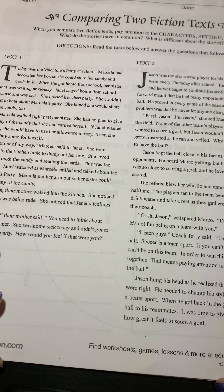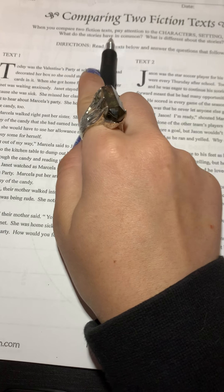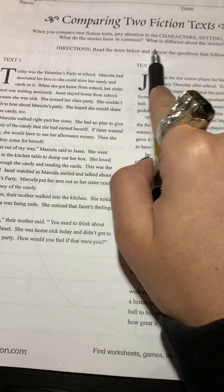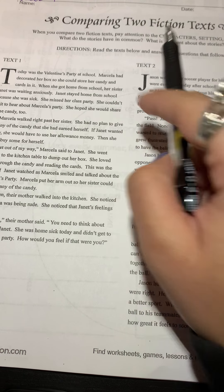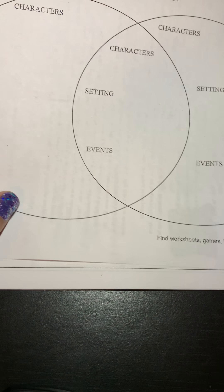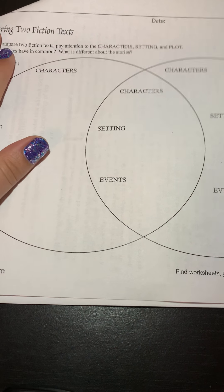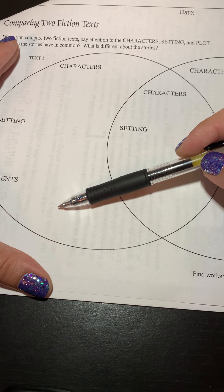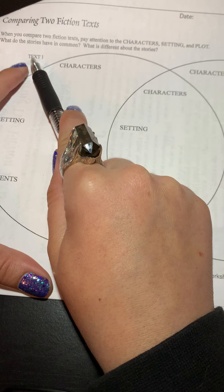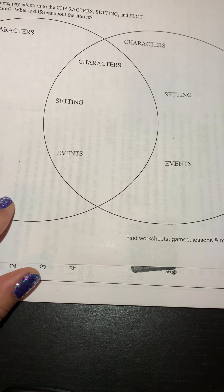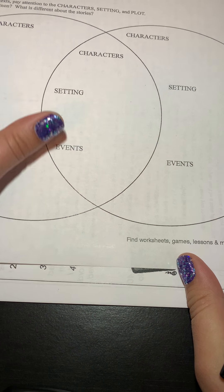We're going to get started by comparing two fiction texts. When you compare two fiction texts, pay attention to the characters, setting, and plot. What do the stories have in common? What is different about the stories? Read the text below and answer the questions that follow. What you're going to be doing on the back is comparing the texts. We want to look at one text and write some things about the characters, the setting, and the events for the first text, and then for the second text, we'll write those here. Anything that's the same, we'll write in the middle, just like we've done before.